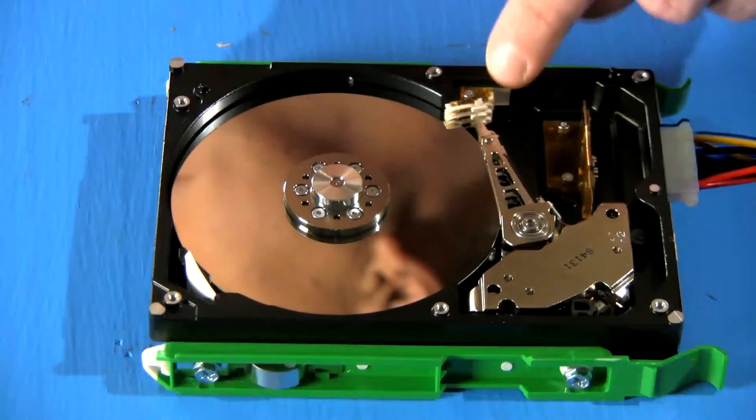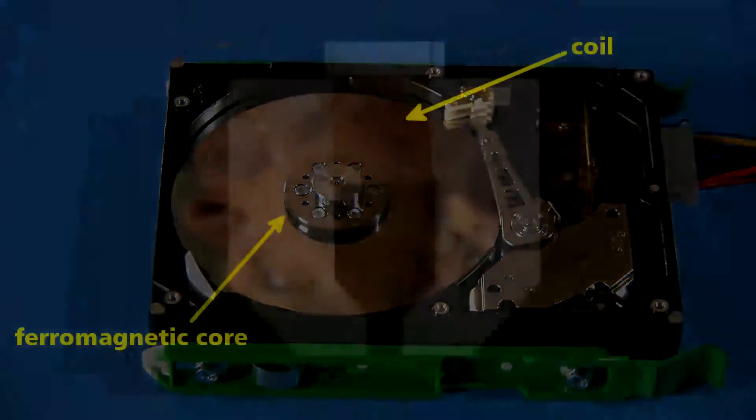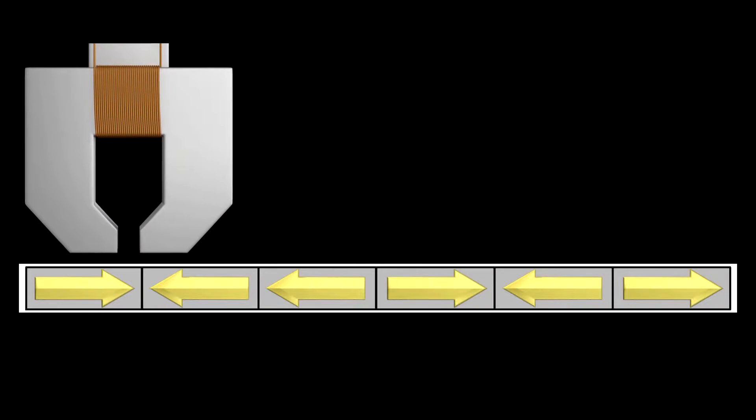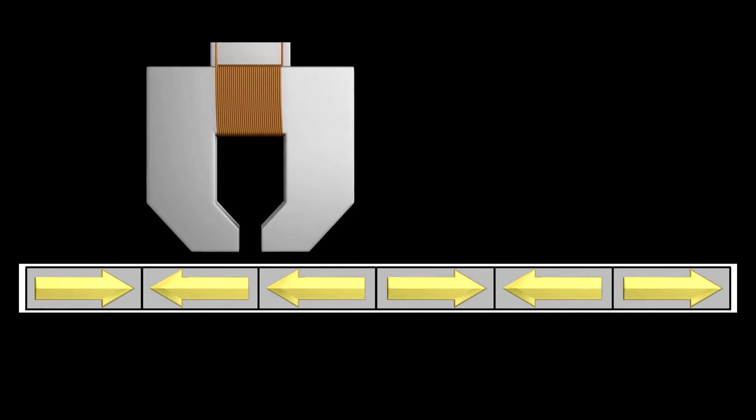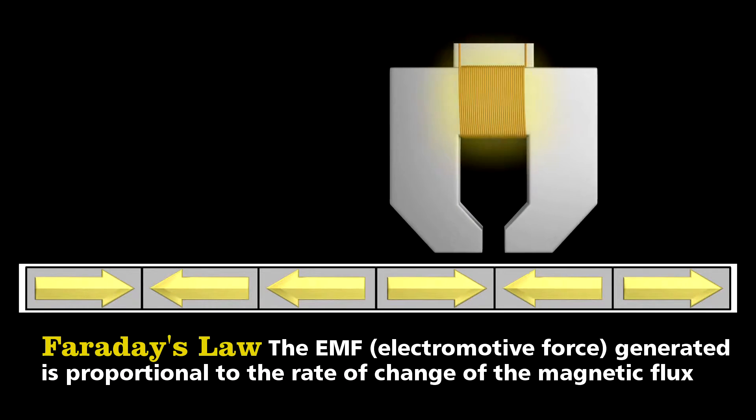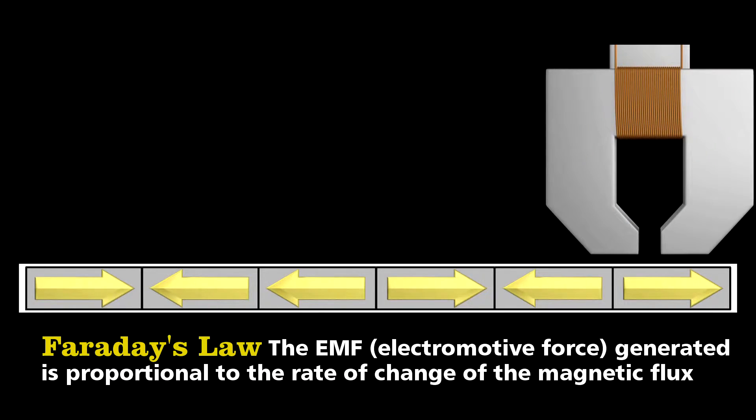At the end of the arm lies the most critical component—the head. At its simplest, it's a piece of ferromagnetic material wrapped with wire. As it passes over the magnetized sections of the platter, it measures changes in the direction of the magnetic poles—recall Faraday's law—a change in magnetization produces a voltage in a nearby coil.